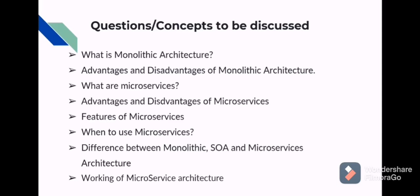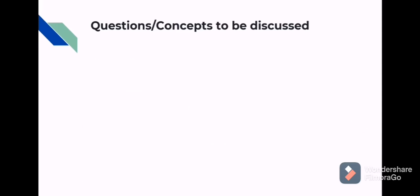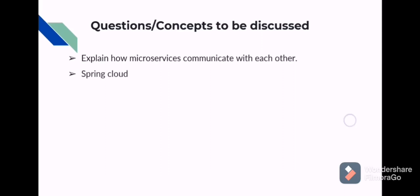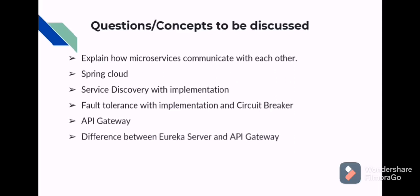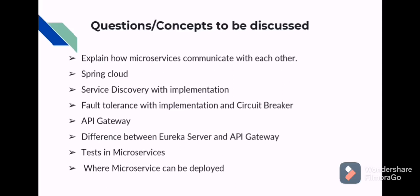Working of microservices architecture. Also, explain how microservices communicate with each other. Spring Cloud. Service discovery with its implementation example. Fault tolerance with implementation and about circuit breaker. API gateway. Difference between Eureka server and API gateway. What are the tests available in microservices? Where microservices can be deployed?